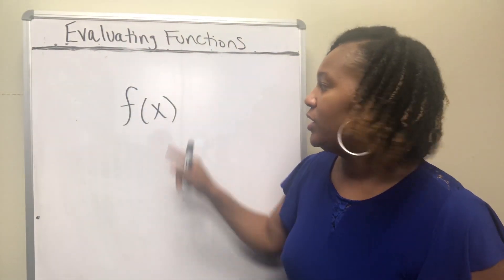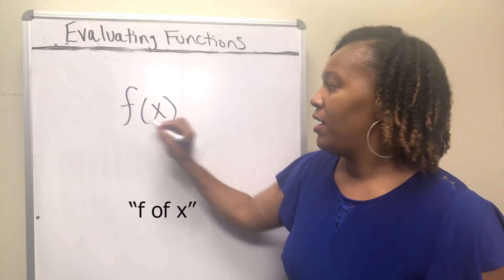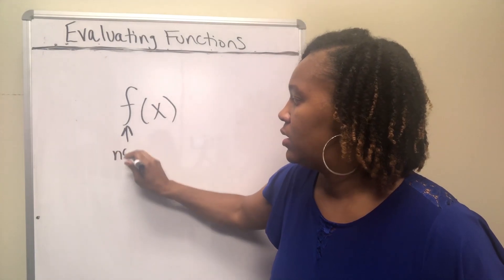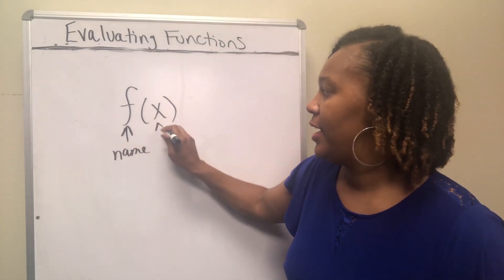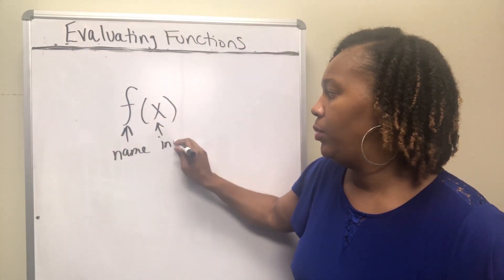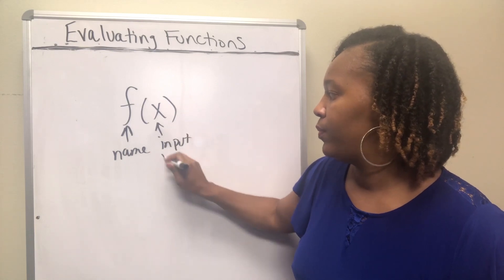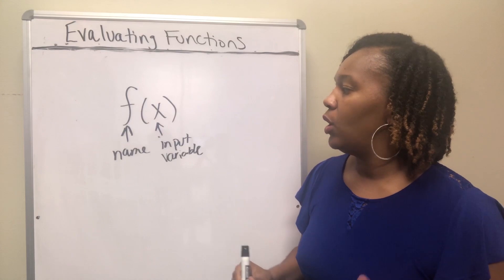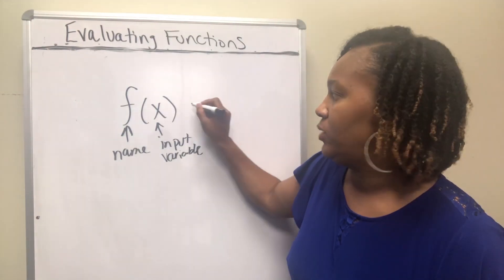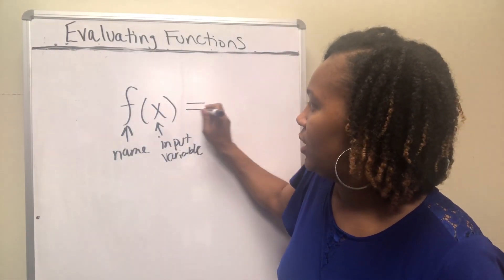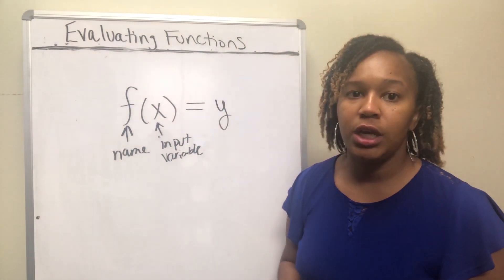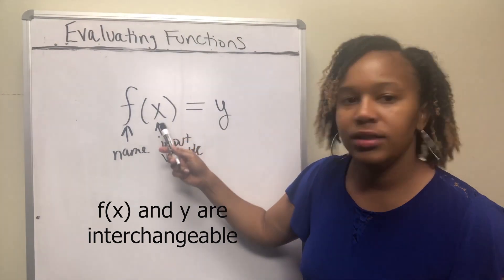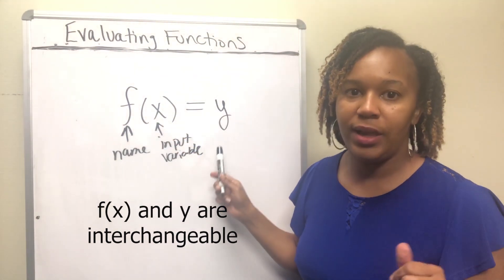This reads f of x. f is the name of the function, and x is what we call the input variable. f of x is also the same as y, so f of x and y can be interchanged. f is just the name of the function, x is the input variable, and y is the output variable.